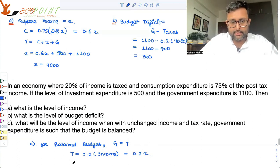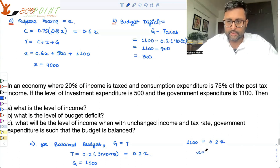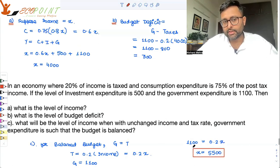Government's expenditure is 1100. So, I will just put this. 1100 is equal to 0.2X. So, X will be coming out to be 5500. This is the answer.